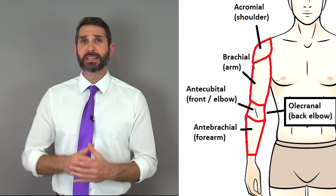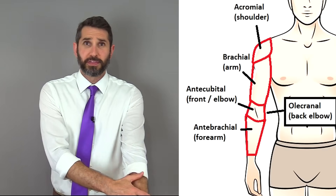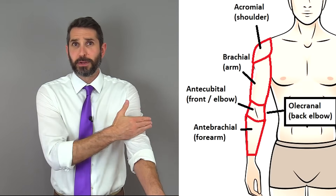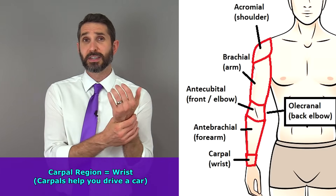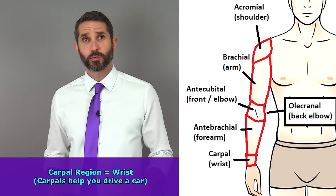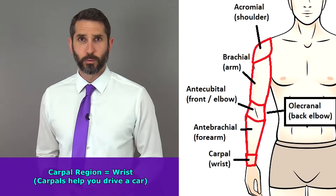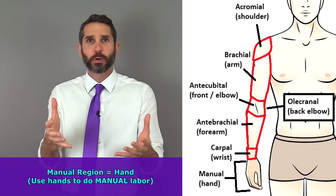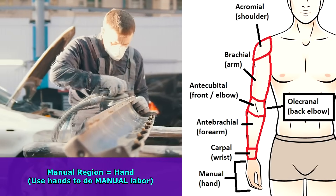The forearm region is referred to as the antebrachial region. A huge mistake many people make is thinking the forearm is the arm — in anatomy, the arm is from shoulder to elbow, and the forearm is from elbow to wrist. The carpal region refers to your whole wrist area. People often confuse carpal and tarsal — just remember your carpals help you drive a car, and your tarsal region is closer to your toes. The manual region refers to the entire region of your hands — manual labor means using your hands.